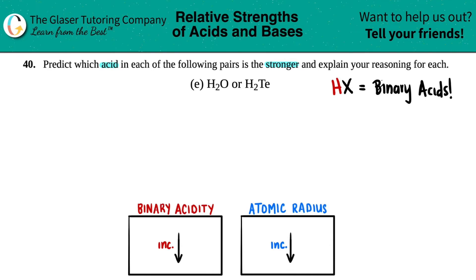Keep in mind, when you're doing your binary acid acidity trend, you don't look at the hydrogens because that's the same thing for both of them. You look at the other element—so you'll look at the oxygen and the tellurium. Oxygen is up top here.